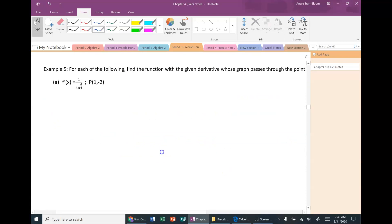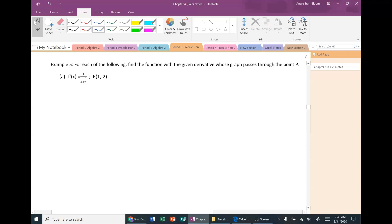Example 5 says: for each of the following, find the function with the given derivative whose graph passes through the point p. They gave us f prime of x equals 1 divided by 4x to the 3 fourths, and the point is 1 comma negative 2. Usually when I'm doing the derivative, I like to use power rule because it's slightly easier than quotient rule. So I'm going to rewrite this using a negative exponent, which is 1/4 times x to the negative 3 fourths.